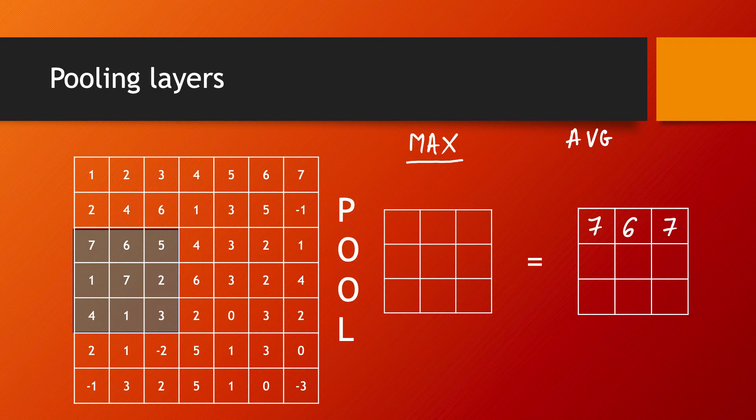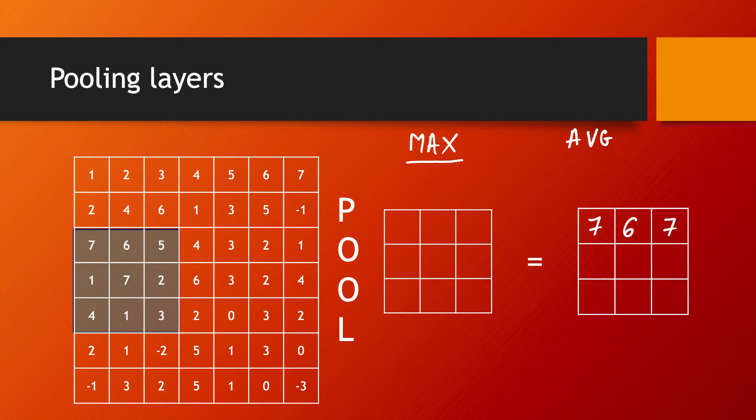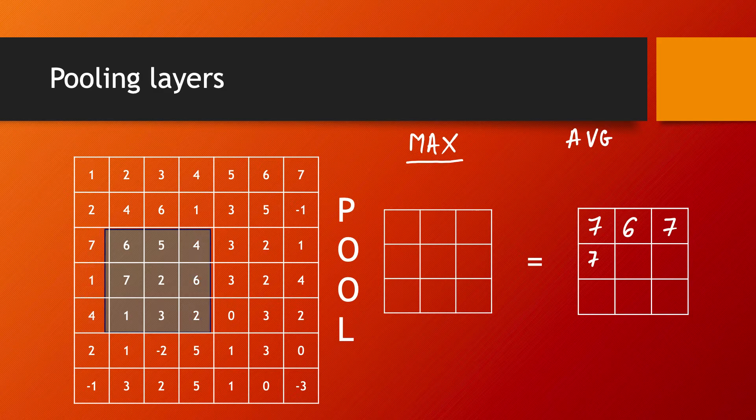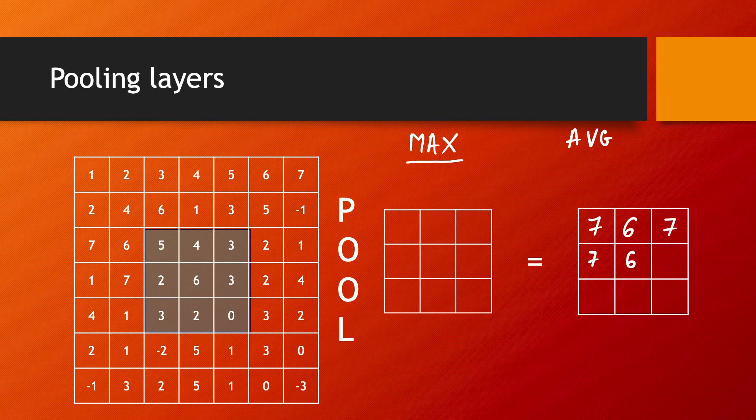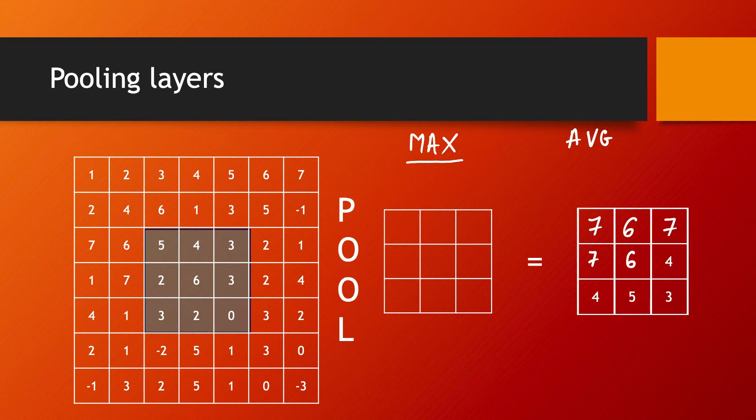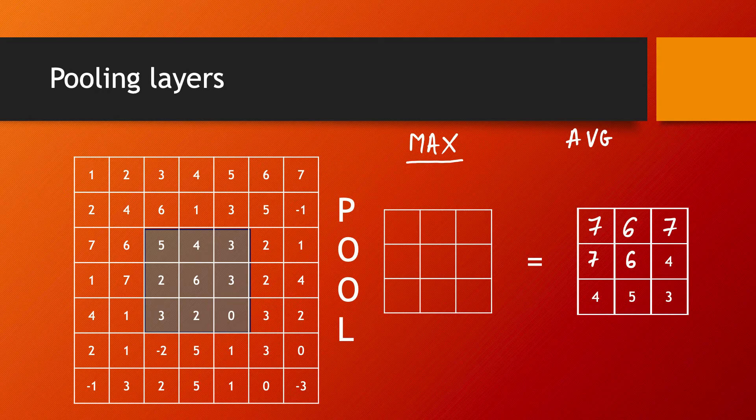We check again the max of these values and we find out that the max is seven. We continue in the same way. We shift two positions and we find out that the maximum here is six and so on. It continues all the way, shift by shift going towards the bottom right corner, and we find out that the other values of the matrix of the computation are these ones on the slide.